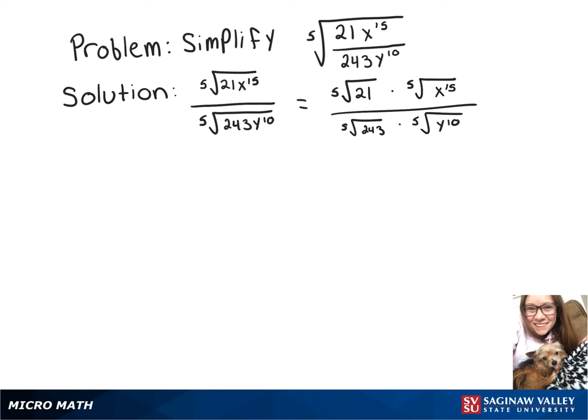Now on top, the fifth root of 21 can't be simplified, so we'll start with the fifth root of x to the 15th. We can divide that 15 by 5, giving us x cubed, and then still multiply by the fifth root of 21.